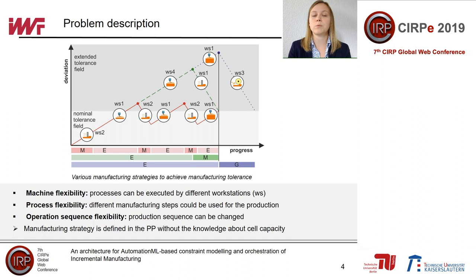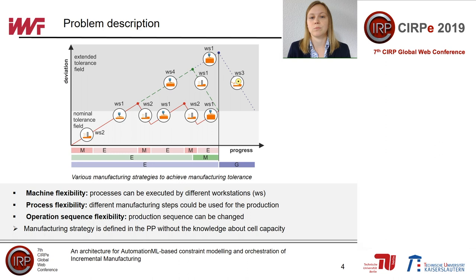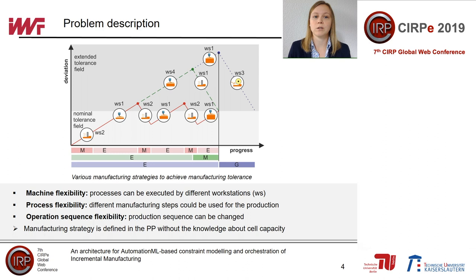When we look at the three manufacturing strategies in the figure, we can identify three of the before-mentioned flexibility aspects which can be used to meet the tolerance field. The tolerance field is an example of a process constraint we must fulfill during production. First, we can use different workstations to manufacture a part. Furthermore, we can use different manufacturing strategies — for example, a grinding process instead of a milling process. We can also identify operation sequence flexibility.